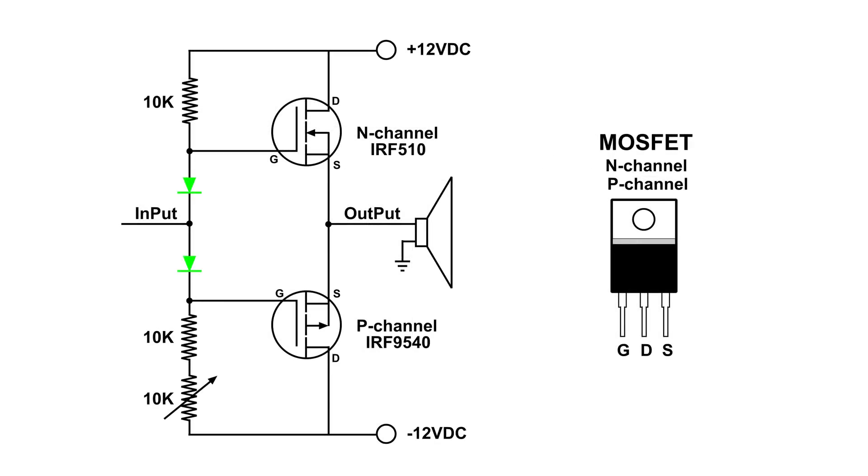Both the P channel and N channel MOSFET are configured like this. The pin all the way to the left is the gate. The center pin is the drain and the most right pin is the source.